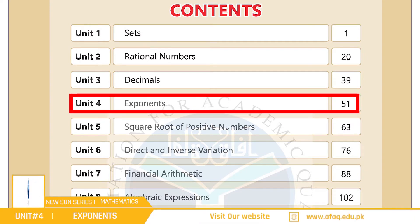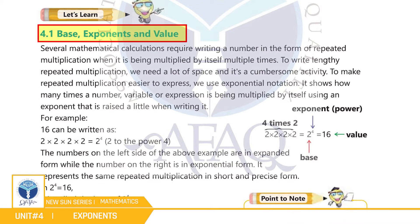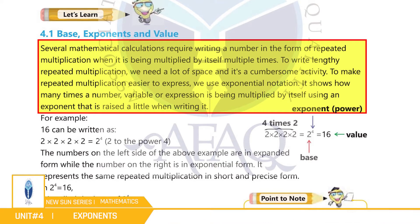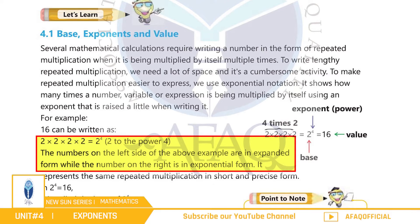بچو ہمارا topic ہے 4.1 base, exponents اور value۔ بچو اگر ایک نمبر اپنے ساتھ کئی بار ضرب ہوتا ہے تو اس نمبر کو لکھنے میں بڑی cumbersome feeling ہوتی ہے، اس لیے اس نمبر کو exponential notation میں لکھا جاتا ہے۔ مثال کے طور پر ہمارے پاس ایک نمبر ہے جیسا کہ 2 multiplied by 2 multiplied by 2.